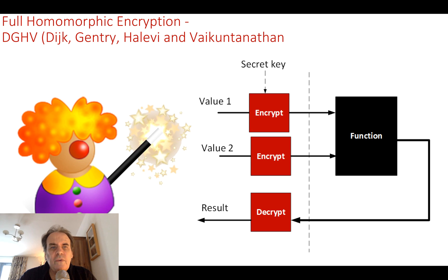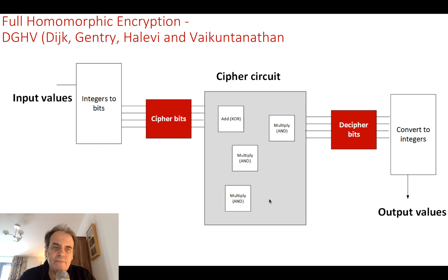The way that full homomorphic encryption or the DGHV system works is that we take our values. Typically, these are single bits. So we take a single bit and then we encrypt that value with our secret key. It then goes into a function and we can operate on the values, the cipher values, in the way that we'd normally do. And then when we get the result, we then decrypt it. So the public key can be applied here, and then the private key could be applied here.